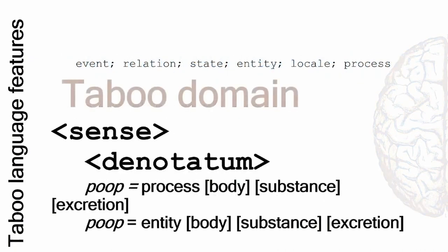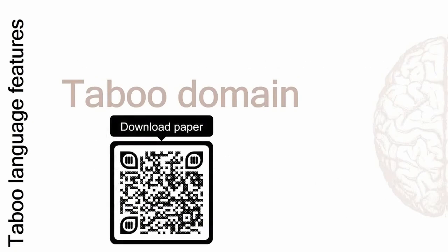The next feature is the semantic domain of a taboo construction — such as religion, scatology, animals, disease, etc. For this, we use an element called 'denotatum,' which is part of sense. We use it to indicate whether the taboo word relates to an event, a relation, a state, an entity, a locale, or a process. The ontology is available for those who are interested — simply send an email to Gerhard van Huisteen and he will give you access.